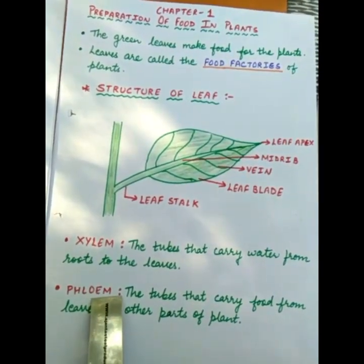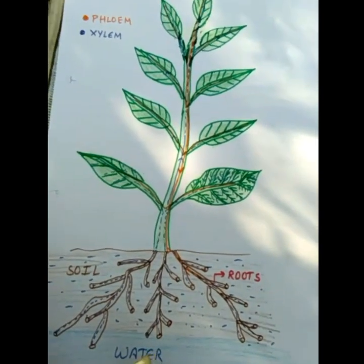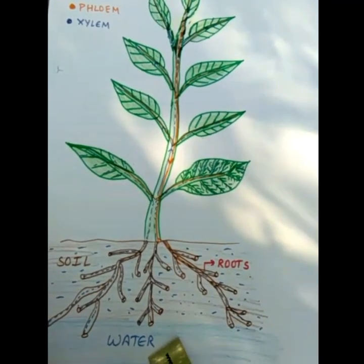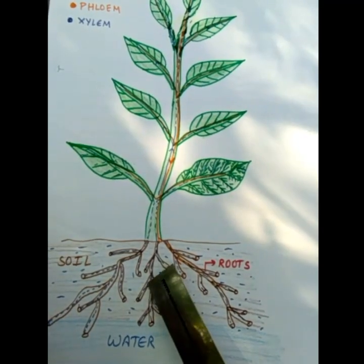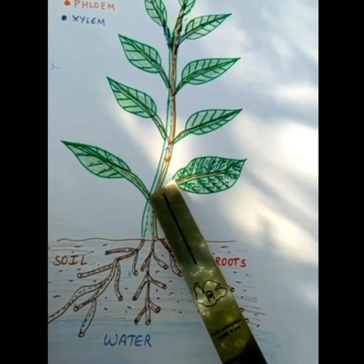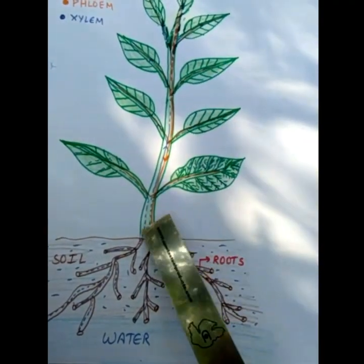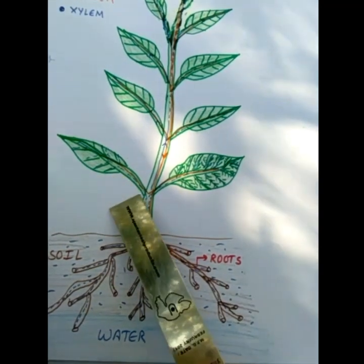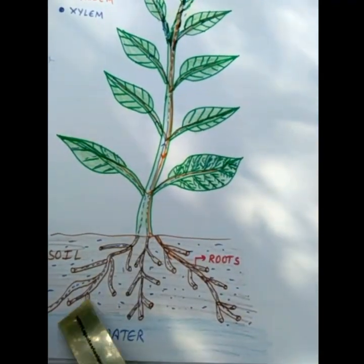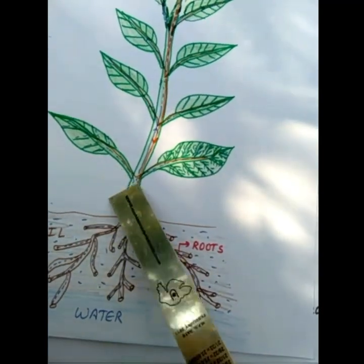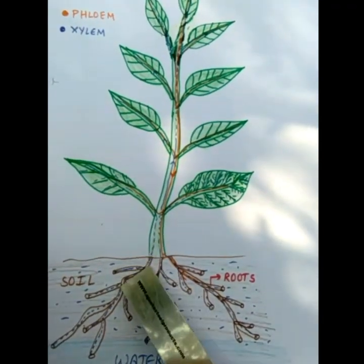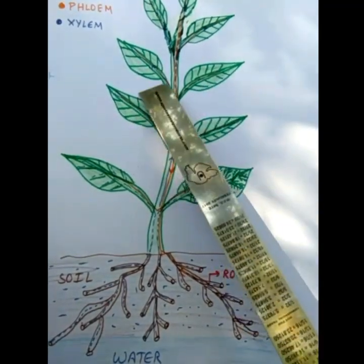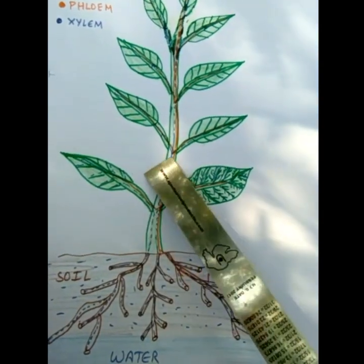To understand xylem and phloem more easily, let us look at this picture. You can see the roots in the soil — they are also in the form of tubes. Water is present in the soil and goes from the roots through these tubes upwards. These tubes carry water from the roots to all the parts — to the leaves, to the veins, to the midrib. The blue dotted lines show that water is going from the soil to the leaves through xylem tubes, carrying water from roots to all parts of the plant.